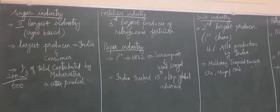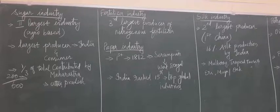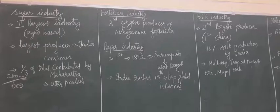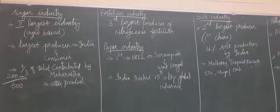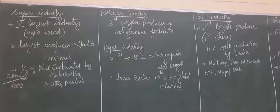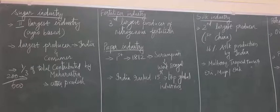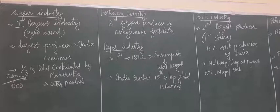The next one is fertilizer industries. India is the third largest producer of nitrogenous fertilizers. The next is the paper industry. The first mechanized paper mill was set up in 1812 at Serampore in West Bengal.